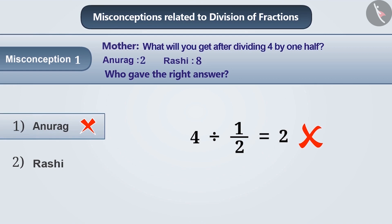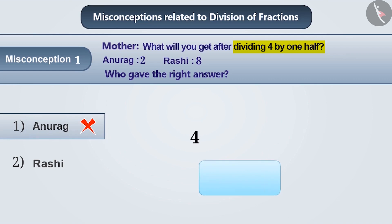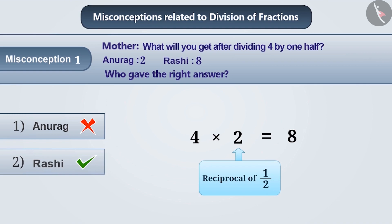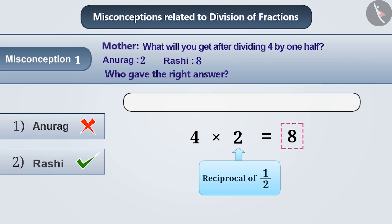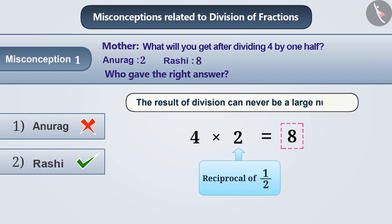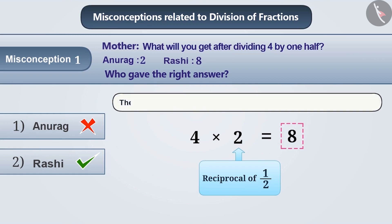The correct understanding is that dividing four by one half means that four is multiplied by the reciprocal of one half, and that is two, which results in eight. This means that Rashi's understanding is correct. Many times children are able to find the right answer eight, but in spite of that, they consider it wrong because they assume that the result of division can never be a larger number. This is also a misconception. Keep in mind, the result of division can be larger than the numbers that are divided.